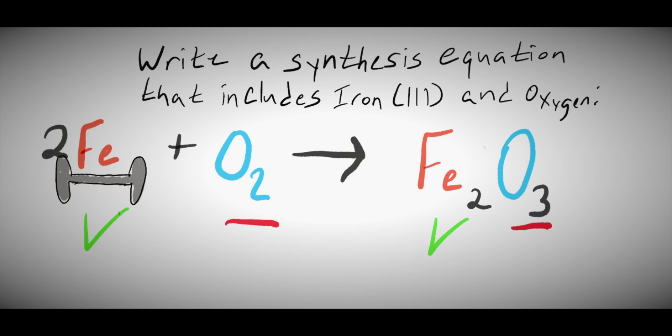By adding a 3 to the reactant side and a 2 to the product side, this will give us 6 total oxygens on both sides of the reactions. But, now this changes our iron again. Now, we have 4 irons on our product side and only 2 on our reactant side. In order to fix this, we're going to have to change our reactant's coefficient to 4.